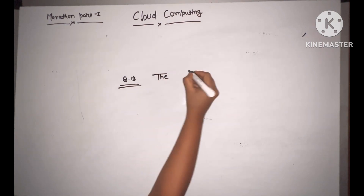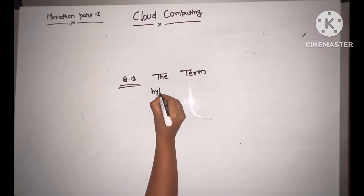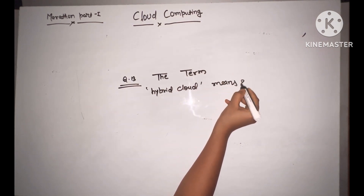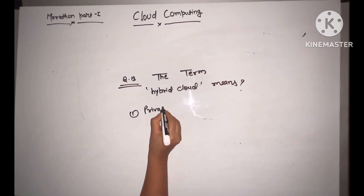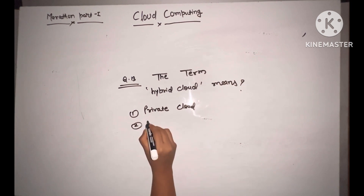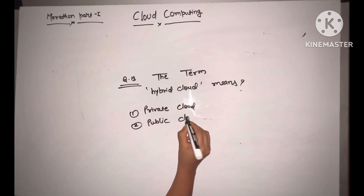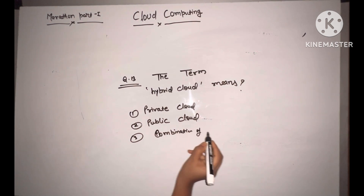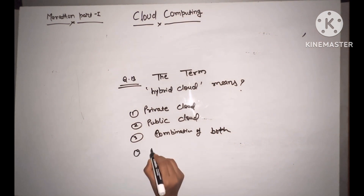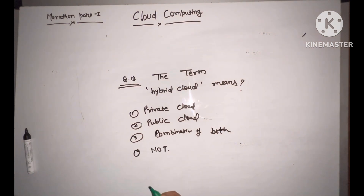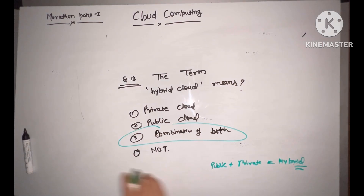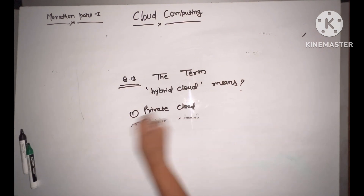Question number 13: the term hybrid cloud means? Options are private cloud, public cloud, or combination of both. The answer is combination of public plus private equals hybrid cloud. Correct, plus one.